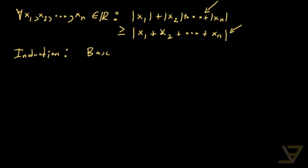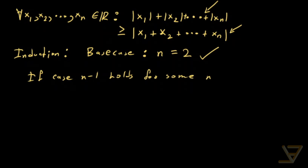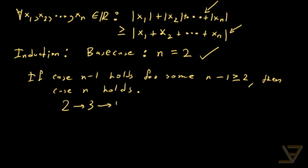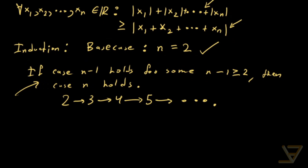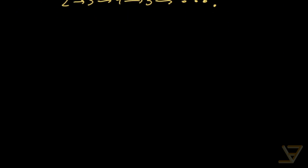The base case, n = 2, is done — we just proved it. What we're going to show is that if case n−1 holds for some n−1 ≥ 2, then case n holds. It falls like a domino effect: two leads to three, three leads to four, and so on to infinity — countable infinity. That's the power of induction: by taking care of the base case and the inductive step using the induction hypothesis, we can prove it for all n.